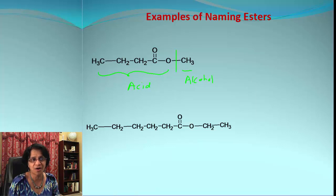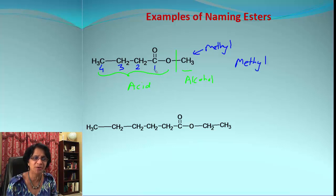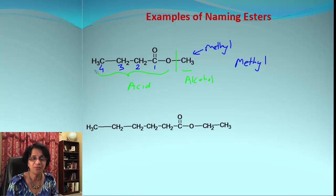Whatever part you get from the alcohol, that is going to be a substituent — in this case it's a methyl group. CH3 is just one single carbon atom, so it's a methyl group. When we look at the acid, we start numbering from the carbonyl carbon.